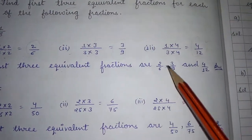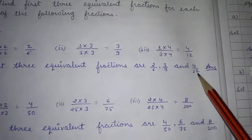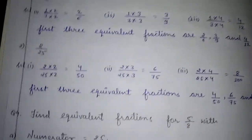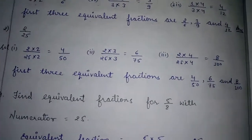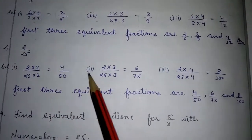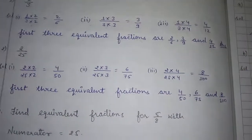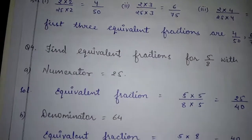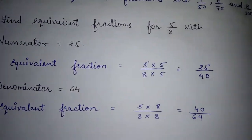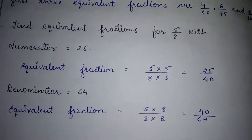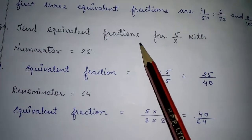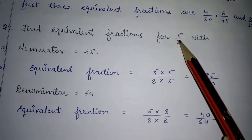So our answer is: the first three equivalent fractions are 2 by 6, 3 by 9, and 4 by 12. Isi tarike se aap remaining questions bhi find out karenge. Question number 4: find equivalent fractions for 5 by 8.